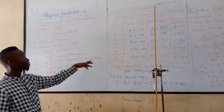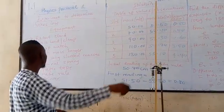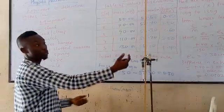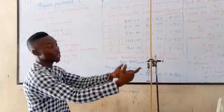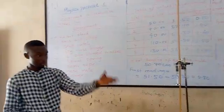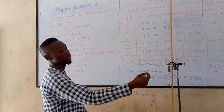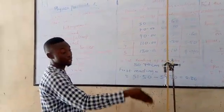We have four 20 gram slotted masses. We have the spiral spring, which is this. We have the paper tape used to hold the meter rule firmly on the retort stand. We have the meter rule. Then we have the pointer. The pointer is used to note the notation in the meter rule.